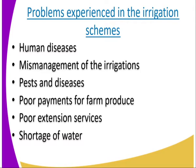Number two is the mismanagement of the irrigation schemes. For example, the Mwea Tebere irrigation scheme experienced mismanagement that resulted in farmers striking, until they formed their cooperatives. Then we have pest diseases affecting the crops — birds and also diseases common in this process that require regular spraying.